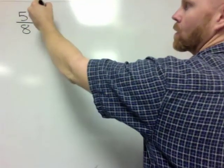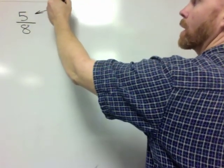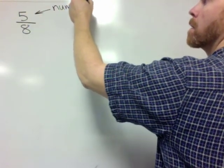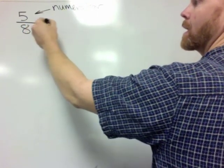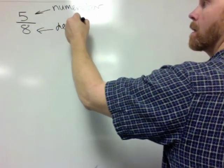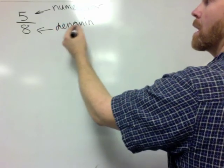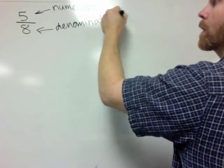Got a bunch of vocabulary words. 5 is called the numerator. 8 is called the denominator. And what does that mean?